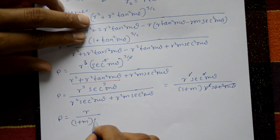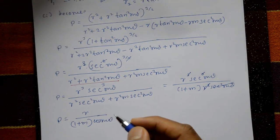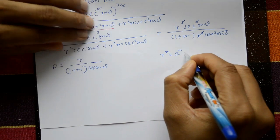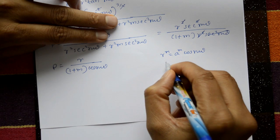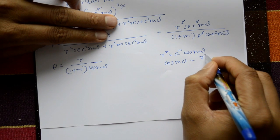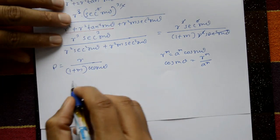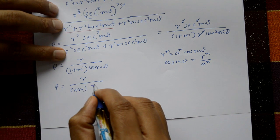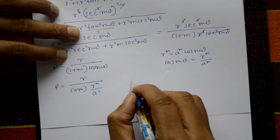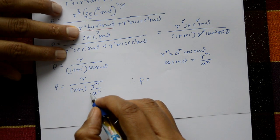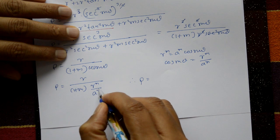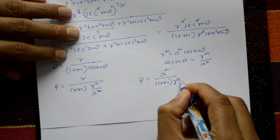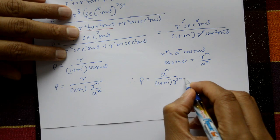From the given curve r^m = a^m·cos(mθ), we get cos(mθ) = r^m / a^m. Substituting: ρ = r / [(1 + m)·(r^m / a^m)] = r·a^m / [(1 + m)·r^m] = r^(1−m)·a^m / (1 + m). Writing r in numerator as r^m: ρ = r^m / [(1 + m)·r^(m−1)], which is the required result.